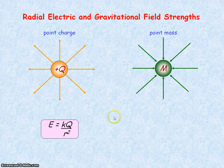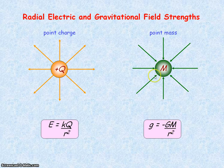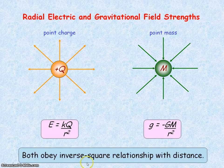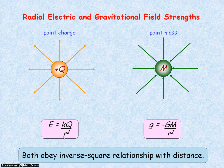Gravitational field strength for a point mass is given by an equation where the gravitational field strength is directly proportional to the mass of the object, but again it obeys an inverse square law with the distance r. Due to this inverse square law relationship, both electric and gravitational fields have an infinite range, because E and g will equal zero only as r approaches infinity.